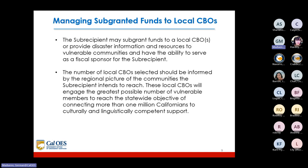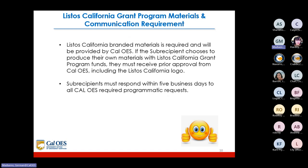The sub-recipient may sub-grant funds to local CBOs to provide disaster information and resources to vulnerable communities, and may serve as a fiscal sponsor. The number of local CBOs selected should be informed by the regional picture of the communities the sub-recipient intends to reach. These local CBOs will engage the greatest possible number of vulnerable members to reach the statewide objective of connecting more than one million Californians to culturally and linguistically competent support.